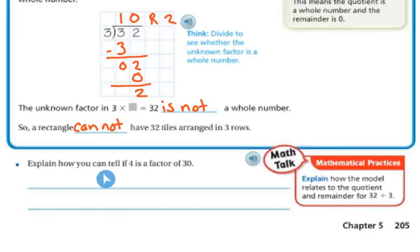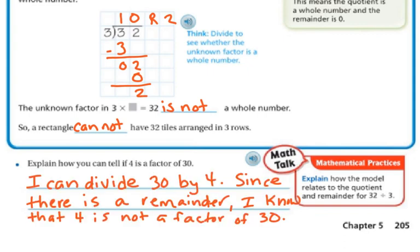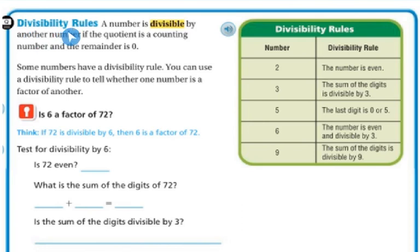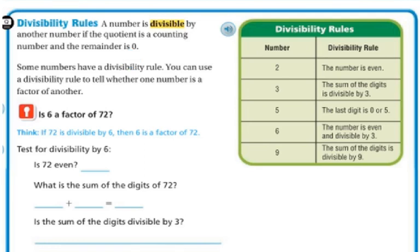Explain how you can tell if 4 is a factor of 30. I can divide 30 by 4, and since there is a remainder, then I know that 4 is not a factor of 30. So, divisibility rules: a number is divisible by another number if the quotient is a counting number and the remainder is 0 — basically if it goes in equally with no remainder.